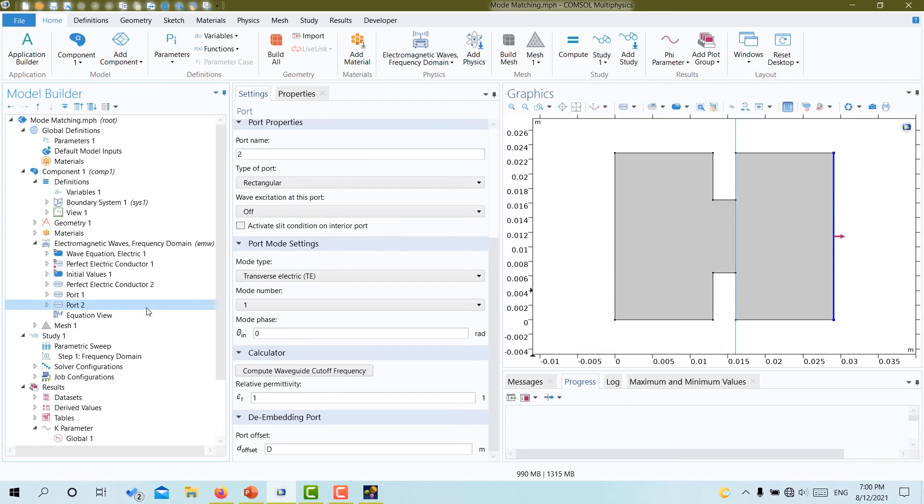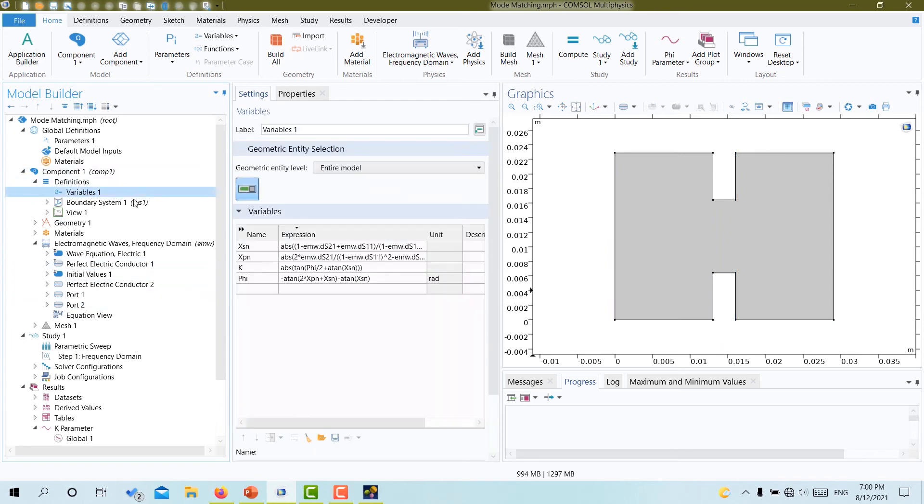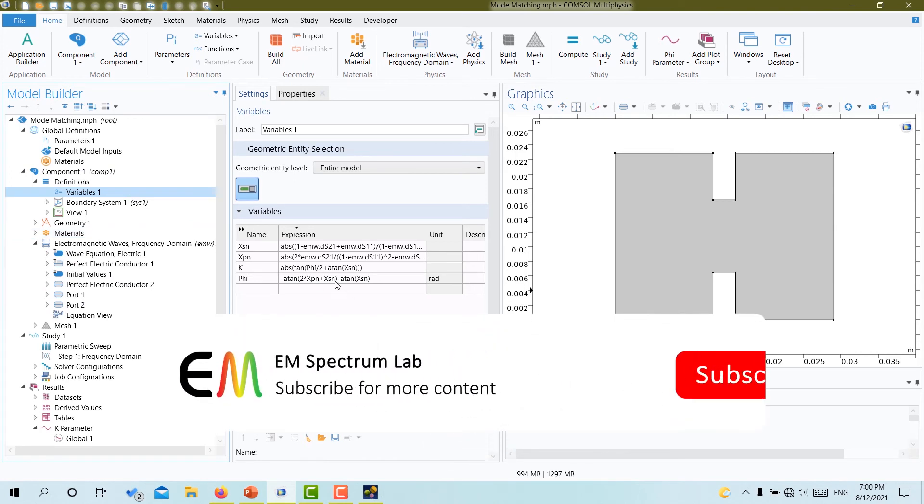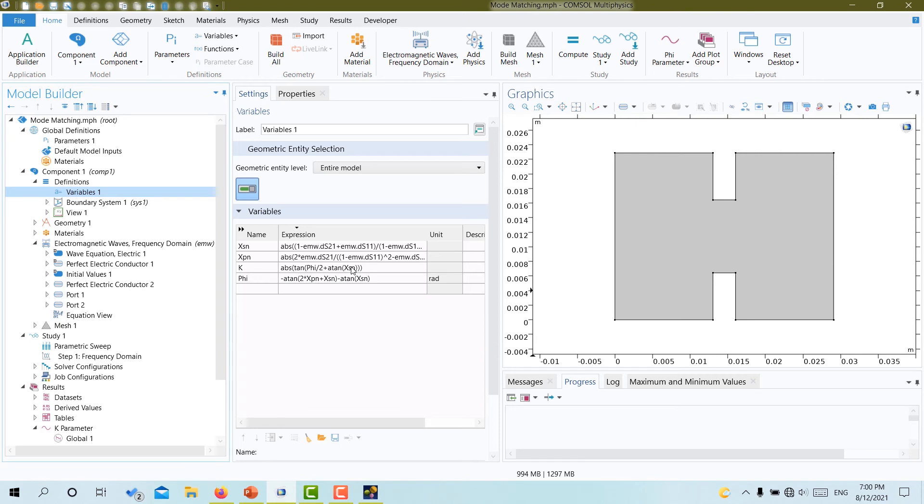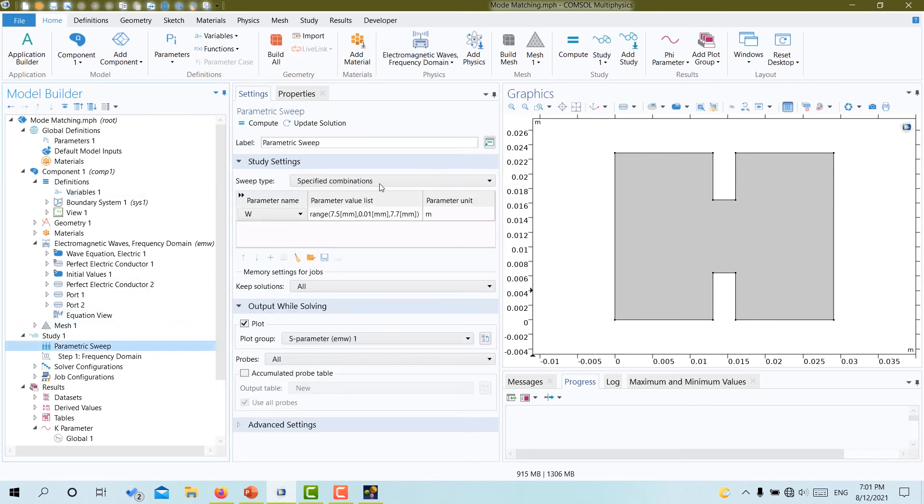To calculate correct values of parameters, I use the embedding ports at the surface of the iris. To compute the required parameters, I define Xp, Xs, φ, and K variables in the variable list. emw.dS11 and emw.dS21 are the parameters of the embedding ports. Finally, by adding a parameter sweep to the study, I swept the defined variables over different values of the iris widths. Now the setup is ready and we can solve the problem.